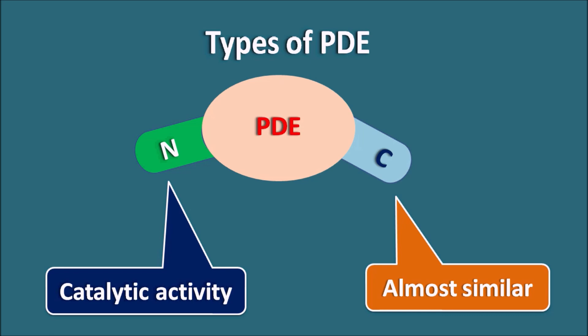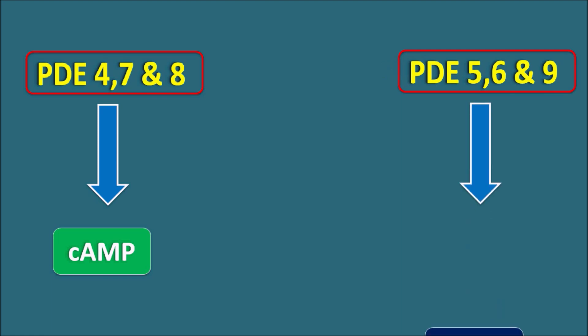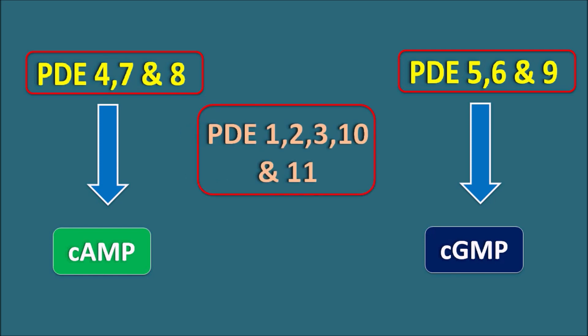Phosphodiesterase enzymes have different selectivity and specificity, and based on that they are classified into phosphodiesterase types 1 to 11. PDE 4, 7, and 8 are specific to cyclic AMP and hydrolyze cyclic AMP into AMP. PDE 5, 6, and 9 are specific to cyclic GMP and hydrolyze cyclic GMP into GMP. PDE 1, 2, 3, 10, and 11 are non-selective and can hydrolyze either cyclic AMP or cyclic GMP.